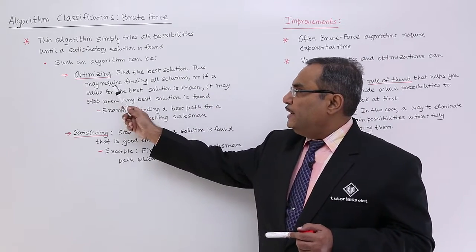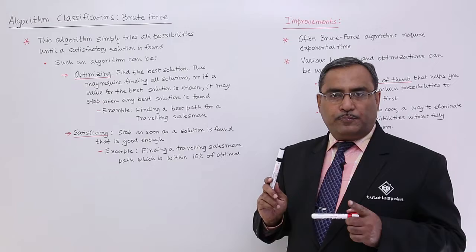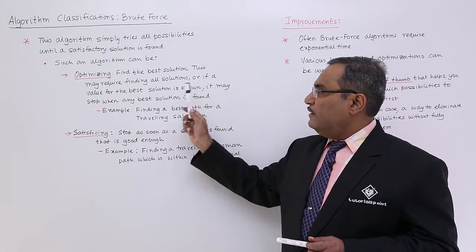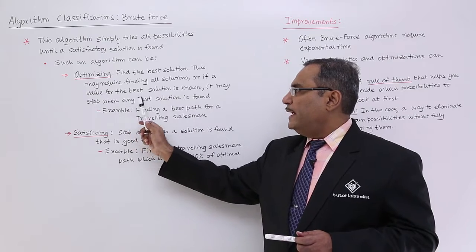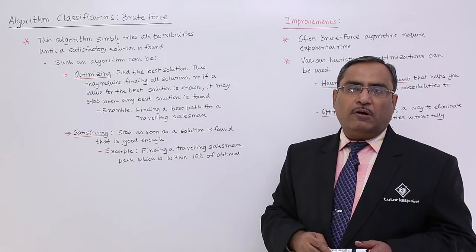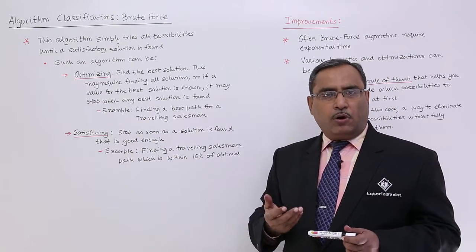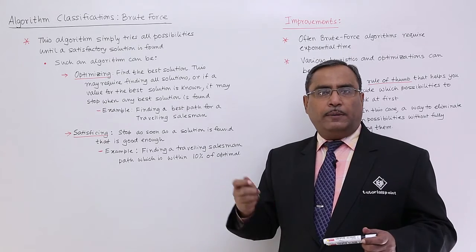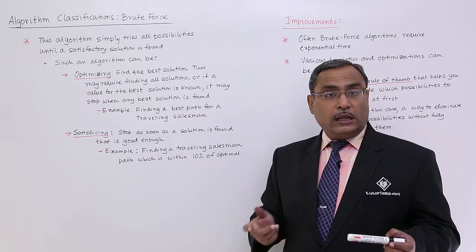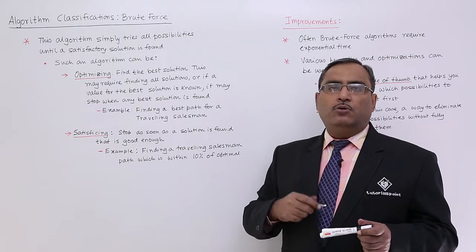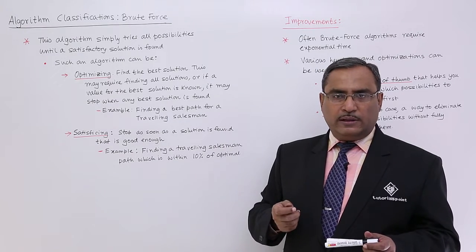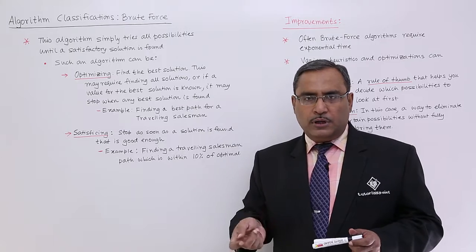Find the best solution. This may require finding all solutions of the problem, or if a value for the best solution is known, it may stop when any best solution is found. It will try to find out all possible solutions and pick up the best solution out of that. Otherwise, if the best solution is pre-known to us, then we shall go on finding all the solutions, and when the best solution is found, then the algorithm will terminate.